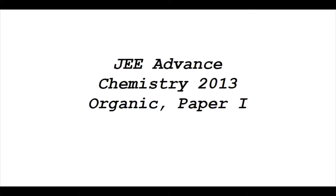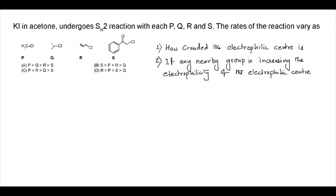In this video, I will discuss the organic chemistry questions of JEE Advanced 2013, Paper 1. In our first question, it has been asked that KI in acetone undergoes SN2 reaction with each of these four compounds. We have to compare the rates of the reaction. To compare the rate of SN2 reaction, we have to remember two major things.